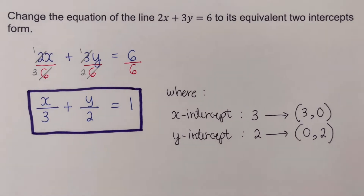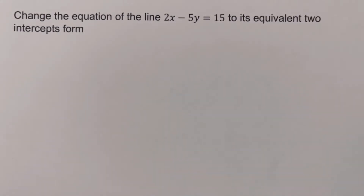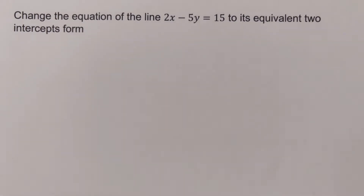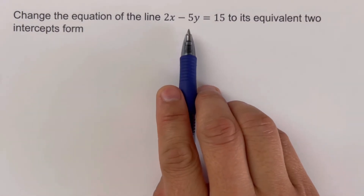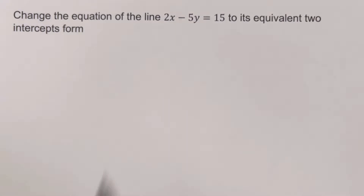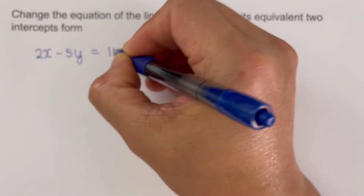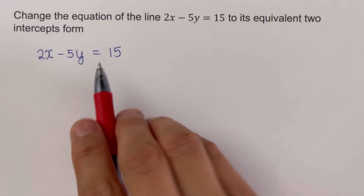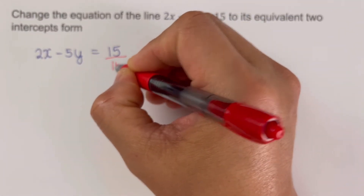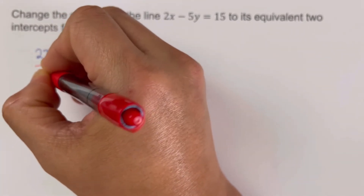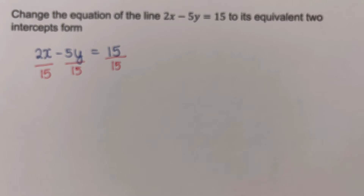Now let's move on to the next example. I would encourage you to pause this video and try this problem on your own, then unpause and check your answer. We are given another standard form and we need to determine the equivalent two-intercepts form. Since we want the right side to equal one, we divide both sides by 15.